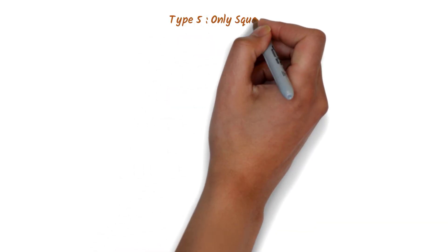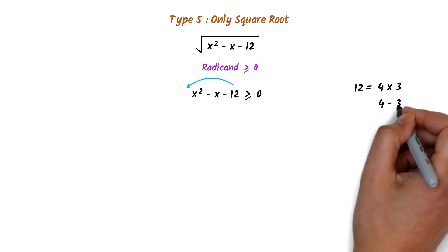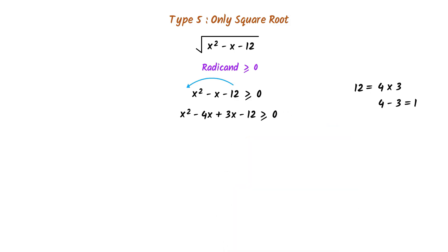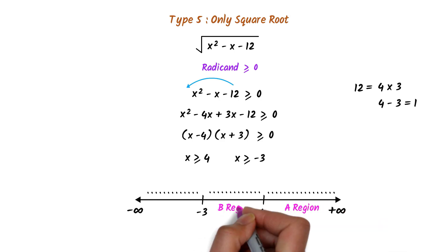The last type is only square root problems. Consider this difficult question. The radicand should be greater than or equal to 0. The radicand is x² - x - 12 ≥ 0. Note that 12 × 1 = 12 and 4 × 3 = 12. So I write x² - 4x + 3x - 12 ≥ 0. After factorization, I get x = 4 and x = -3. I draw a number line with -3 and 4 marked, creating three regions: A, B, and C.